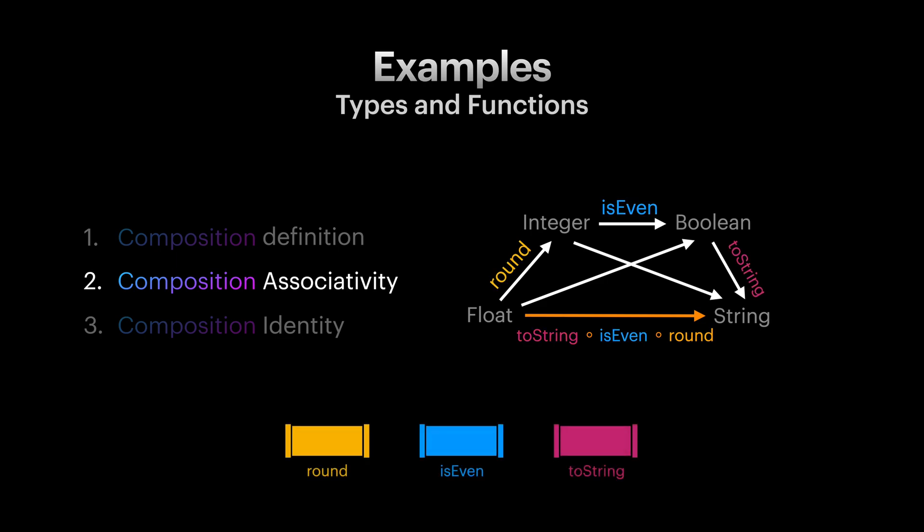Thinking about function composition associativity using our pipe analogy, it really doesn't matter if we compose the first pair of pipes first or we compose the last pair first. All of them lead to the same result. And that's associativity rule.